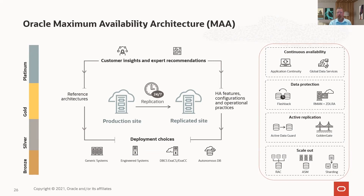Oracle maximum availability architecture — is this a software product? No. It's a solution that's evolved over 20 to 30 years of working with customers. Customer insights and expert recommendations came in, and eventually it evolved into a dedicated team of some of the most seasoned people at Oracle. They use a technique called chaos engineering, which I'll talk about in a moment. Out of that work, we have four different reference architectures: bronze, silver, gold, and platinum. These are tiered — it's not one-size-fits-all, because people have different RPO and RTO requirements.